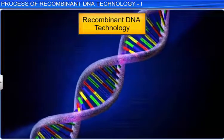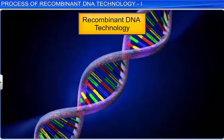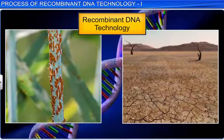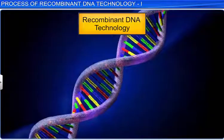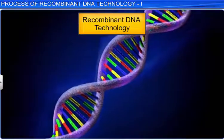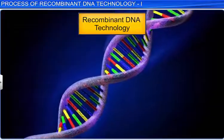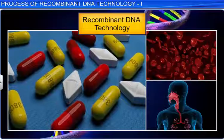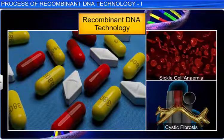Recombinant DNA technology has gained paramount importance in the 21st century. In times when agriculture is faced with challenges such as drought, diseased crops, and poor yield, this technology has a vital role to play in developing better crops. Recombinant DNA technology has also helped produce medicines to prevent and cure diseases such as sickle cell anemia and cystic fibrosis.